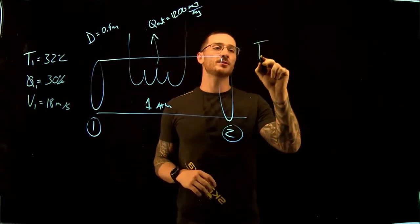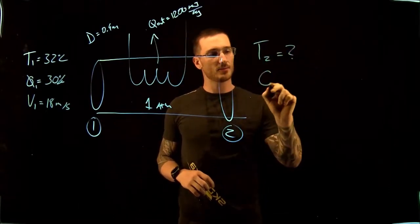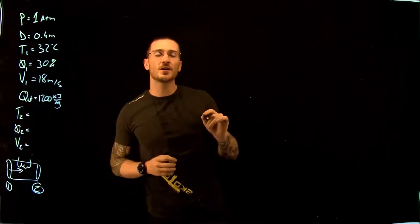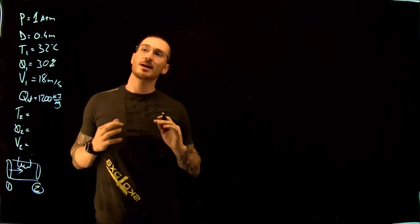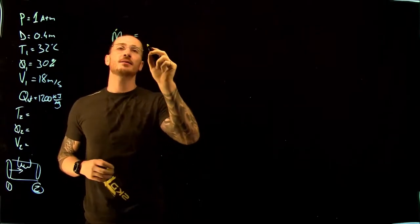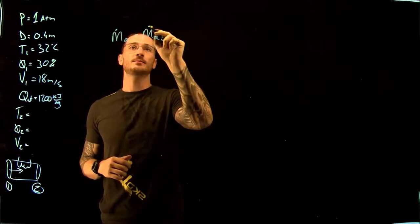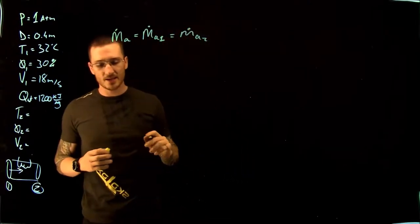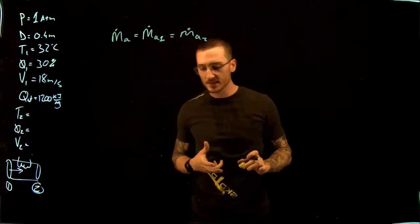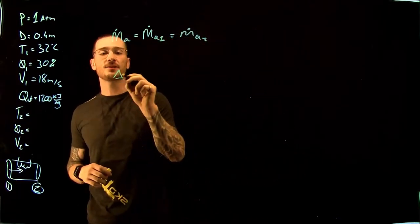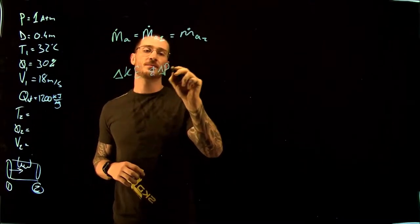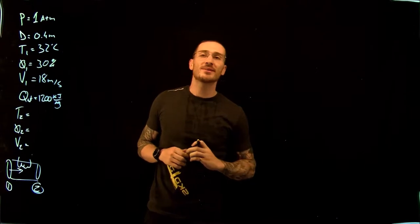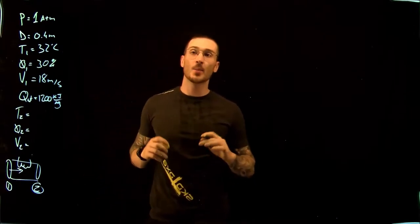They want us to find the temperature at point 2, the relative humidity at point 2, and the velocity at point 2. To solve this problem we'll make a few assumptions: we have steady flow, so the mass flow rate of air is constant between points 1 and 2; dry air and water vapor can be considered ideal gases; and the changes in kinetic and potential energy are negligible. Because there is no humidification or dehumidification, the moisture content of the air remains constant.